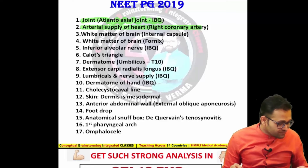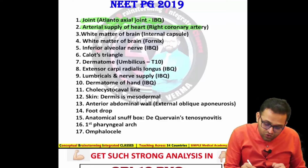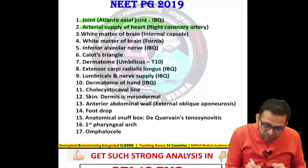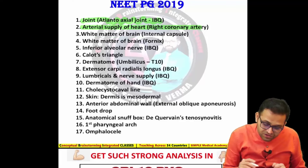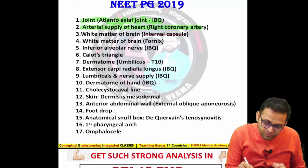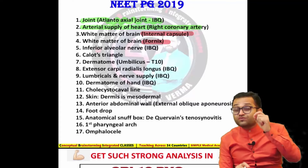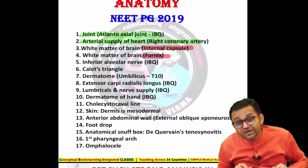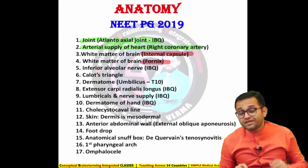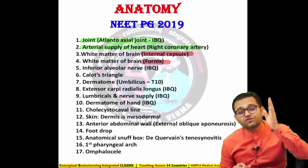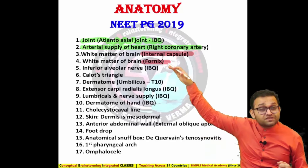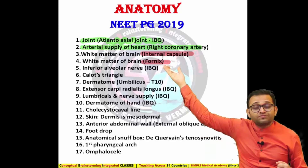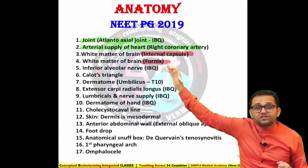You must study the white matter of the brain. Questions have been asked about the internal capsule and the fornix. The fornix is a very, very favorite topic in INICET and NEET PG — it has been asked continuously four times. Earlier they were asking about the corpus callosum, then shifted to the fornix, and also the internal capsule.